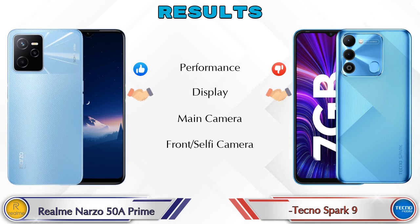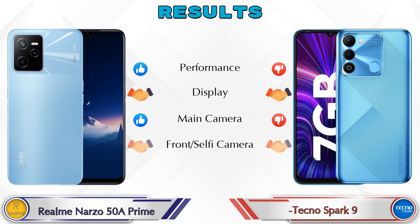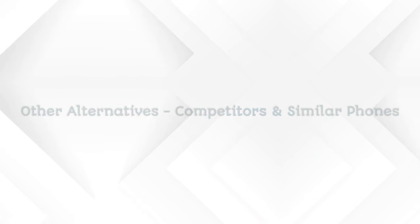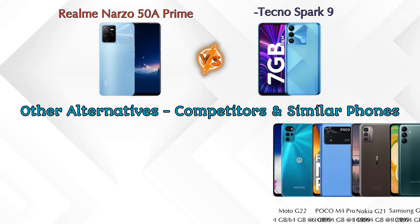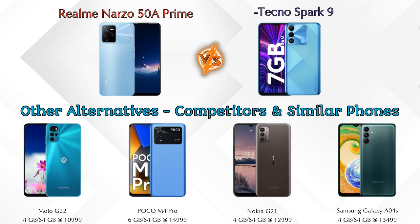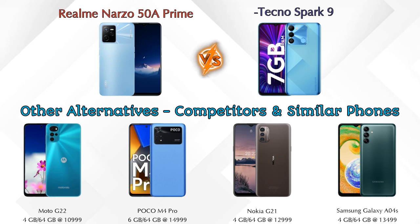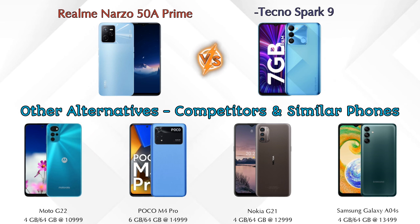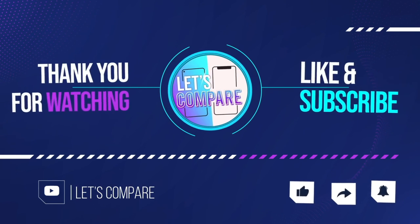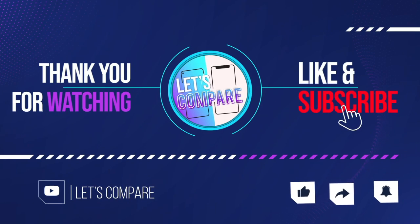Finally, talking about results: in performance the 50A Prime is ahead; in display both phones are the same; in main camera the 50A Prime is ahead; in front selfie camera both phones are the same. For other competitors at the same price, there is the Moto G22 4G, Poco M4 Pro, Nokia G21, and Samsung Galaxy A04s — details about all competitor phones are available in the description. If you like our video, please like and subscribe. Thanks for watching.